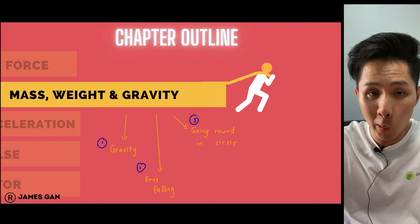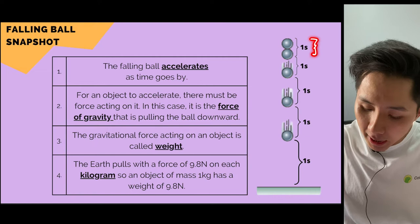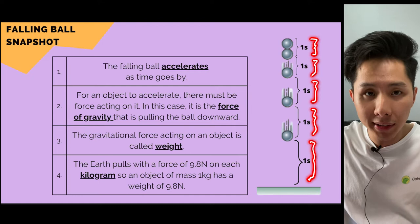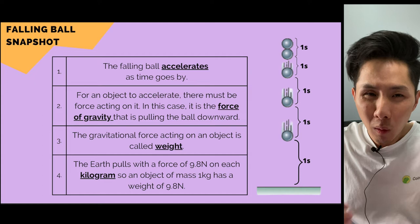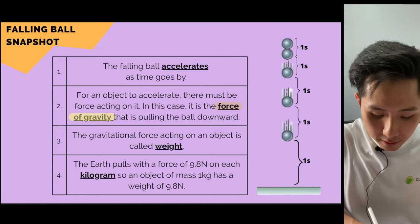Here we have a falling ball snapshot that explains why, as time passes, the ball moves further and further. The reason is the ball is moving faster each second — it's accelerating. What causes it to accelerate is the force of gravity pulling the ball down. Gravity is like the Earth exerting a force to pull the ball downward, and that's gravitational force.